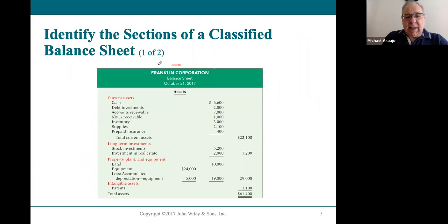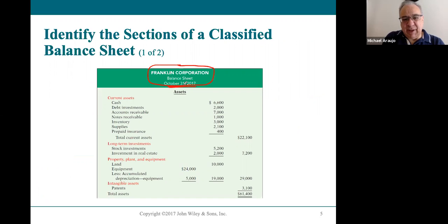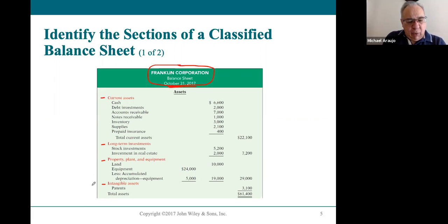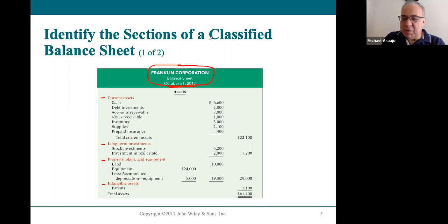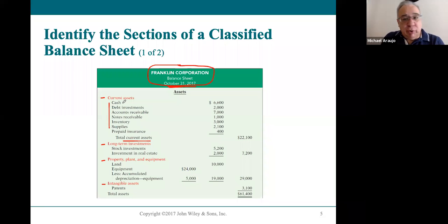Here is a sample balance sheet that you should keep handy this chapter. Franklin Company, as of October 31st — that's the date. All classifications of assets are here: current assets are always listed first, long-term investments second, property, plant, and equipment third, and intangible assets fourth. This particular company has all four classifications because it's introducing you to the classified balance sheet. Under most circumstances, most companies do not have all four.